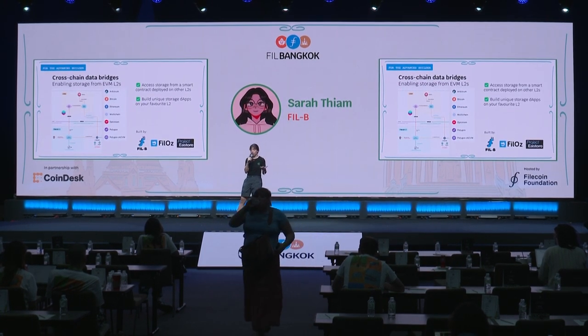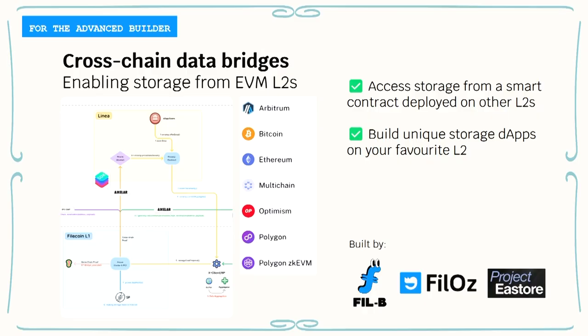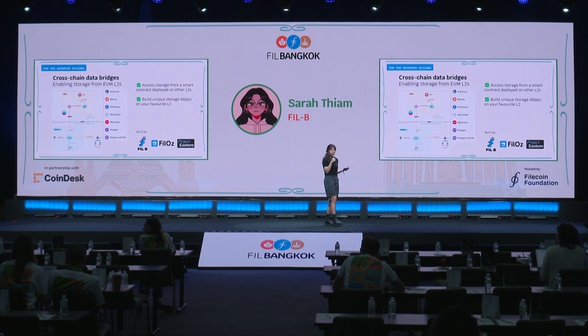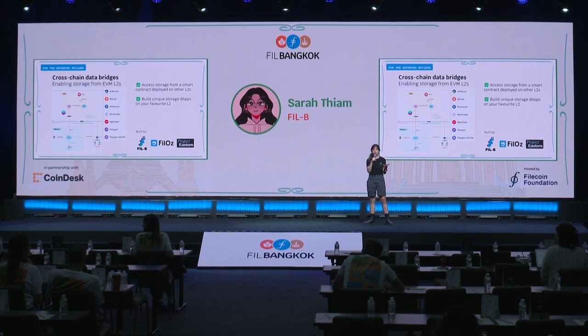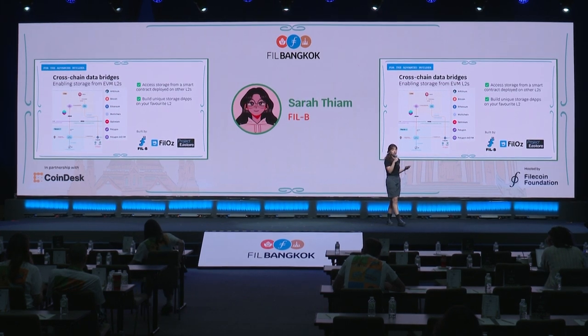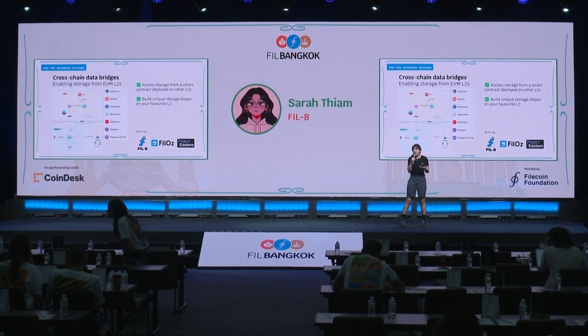For the advanced builder, we have cross-chain data bridges coming out. We have a POC that is already working, deployed to Arbitrum as well as Optimism. The PhilAuss team — our protocol R&D team — did a really interesting POC where they tested deploying a smart contract to Arbitrum that allows any native dApps in the Arbitrum ecosystem to store data using that smart contract back to Filecoin. And it worked.